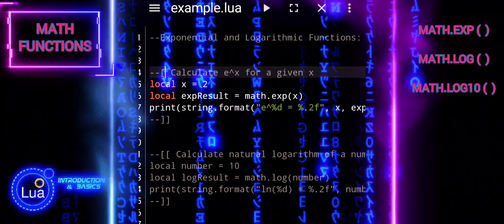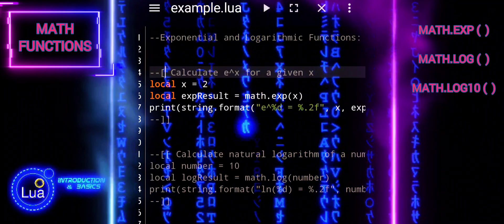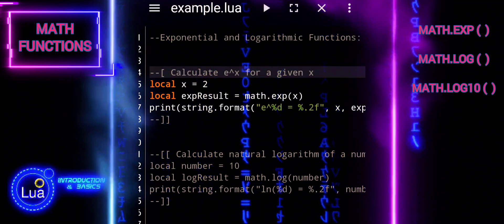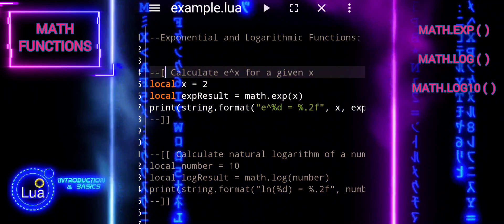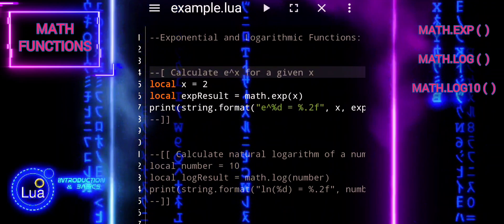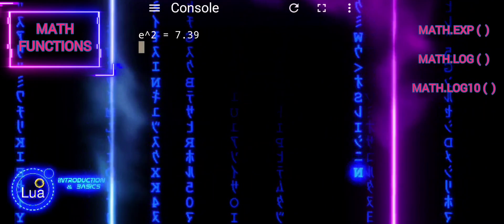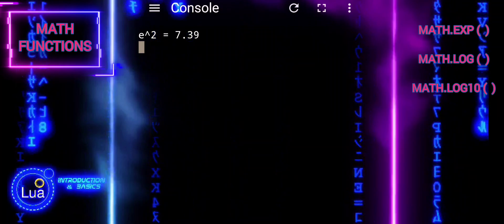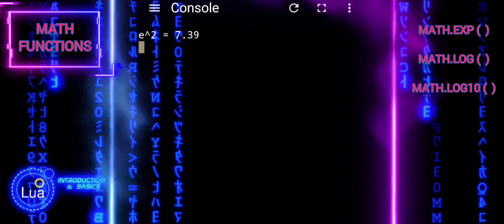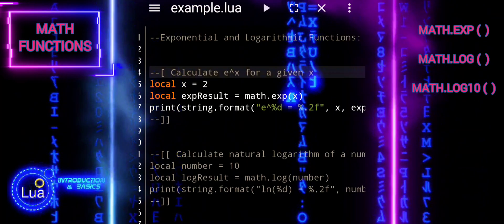The last line prints the result using string.format to format the output. Percent d is a placeholder for the exponent x, and percent f is a placeholder for the exponential result. And .2f specifies that the floating point number should be formatted to display two decimal places.